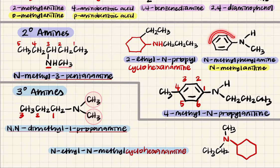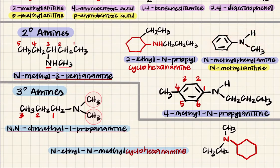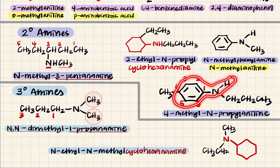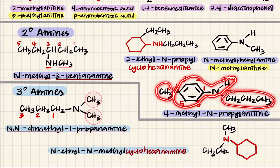For this aromatic secondary amine: find the parent first — it is aniline. You have a methyl group attached to the nitrogen, so it is N-methylaniline. For another example with two aromatic rings and one aliphatic group: one benzene ring is the parent — aniline. Circle the substituents: 4-methyl and propyl. The name, following alphabetical order, is 4-methyl-N-propylaniline.